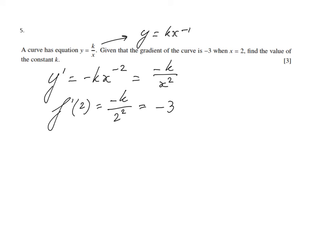Now we can solve it. So minus k over 4 equals minus 3, so minus k equals minus 12, and therefore k has to be 12. So that's the value of the constant k, a past paper question.